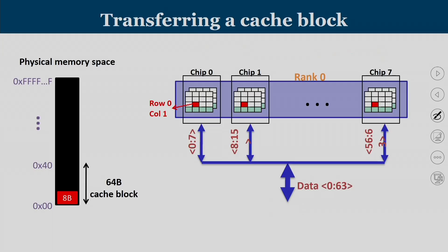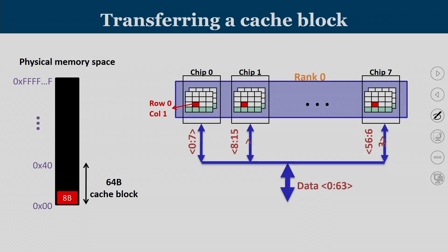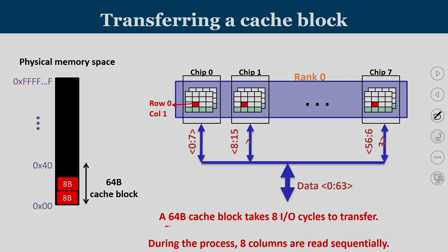After getting the first 8 bytes, the column number is incremented. The row buffer of bank 0 of chip 0 carries the first 8 bits; row 0 of chip 1 bank carries the next portion in its row buffer. Every row buffer across bank 0 of all chips carries the corresponding row, and varying the column number gives 8 bits each — together constituting the next 8 bytes, making 16 bytes. A 64-byte cache block takes 8 IO cycles to transfer, requiring 8 columns sequentially.